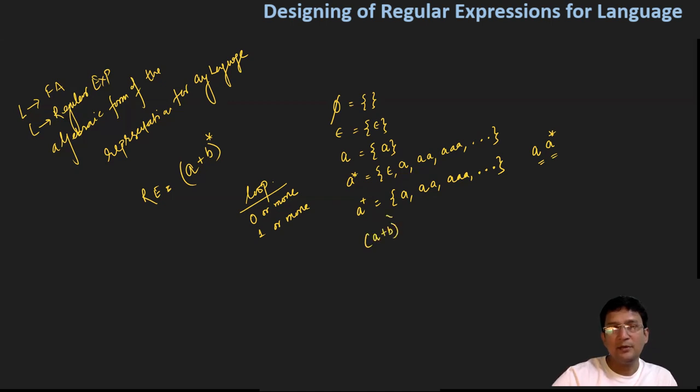If you say (A+B) star, this meaning is (A+B) closure. Here the plus operator means union. You say A or B. (A+B) whole star means you either select A or B, and the Kleene closure will be part of the language. If you select A, the string becomes A. If you select B, it becomes B. If you select A then B, it becomes AB.